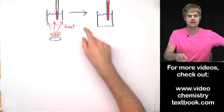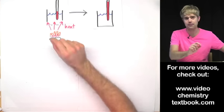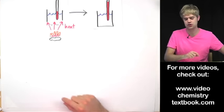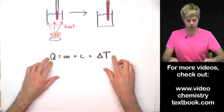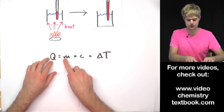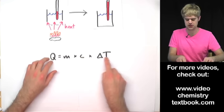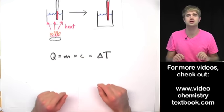To calculate how much heat energy the water absorbed, we're going to use the equation Q equals M times C times delta T.